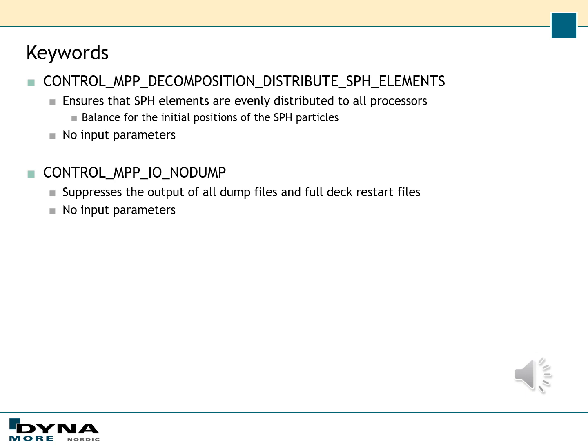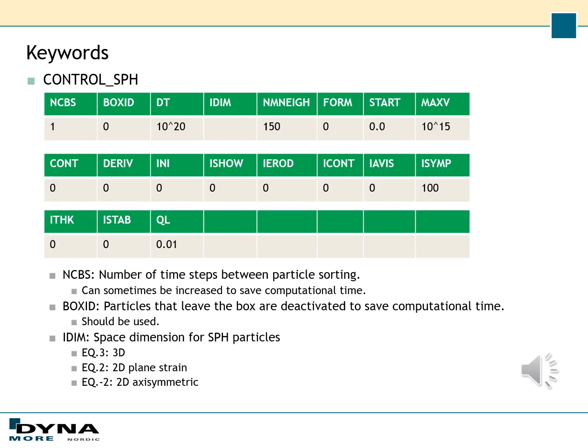The control MPP decomposition distribute SPH elements keyword requires no input parameters, and I recommend that you always use it in your SPH simulations. You can also activate control MPP IO no dump, which will suppress the output of dump files and full deck restart files. The next keyword is control SPH, which contains a couple of important settings. The first option I would like to mention is NCBS, which is the number of time steps between particle sorting. This defaults to 1, but sometimes it may be increased to save some computational time.